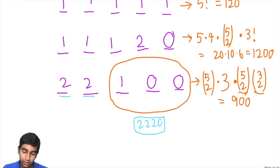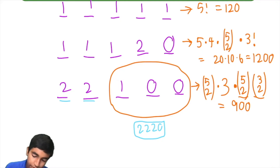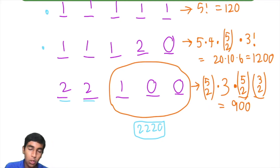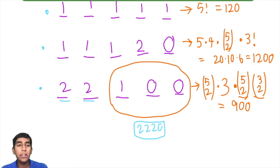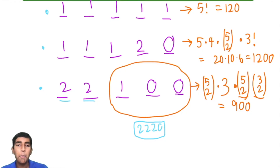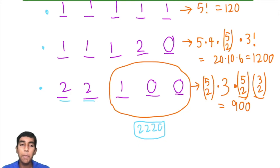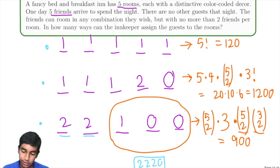To summarize: we broke it into three cases — five rooms with one person each, three rooms with one person plus one room with two people, and two rooms with two people plus one room with one person. For each case, we counted how many ways to pick which rooms have two, one, or zero people, then multiplied by how many ways to assign people to those rooms. Add them up and you get the answer. This is a very standard casework pattern.